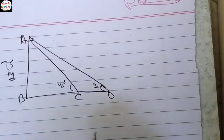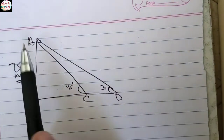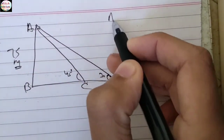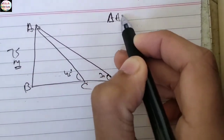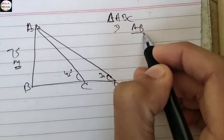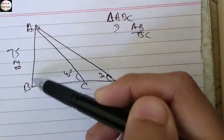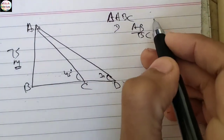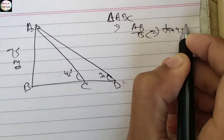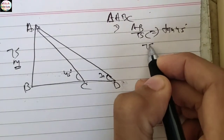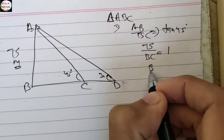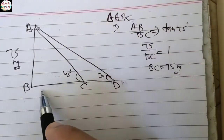सबसे पहले हम लेते हैं angle ABC। A, B और C में हम लेते हैं AB upon BC — यानी perpendicular upon base — जो tan की property होती है। tan 45 degree, AB हमें given है 75 meter। tan 45 की value 1 है, तो BC = 75 meter आ गया। यानी हमने BC find out कर लिया।